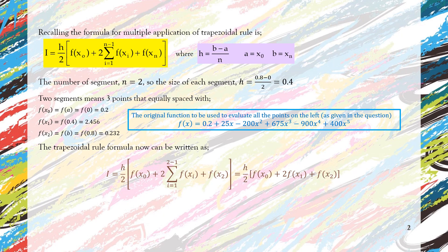And of course after we have all the values, we substitute them into the original function of the multiple application trapezoidal rule. So here we go and we will get I is equal to 1.0688.